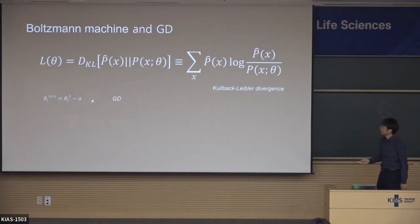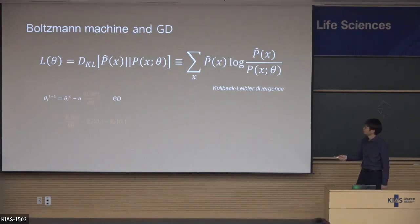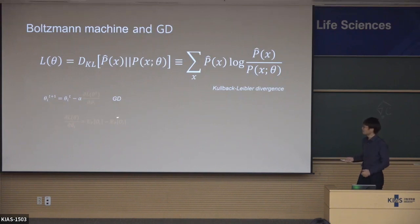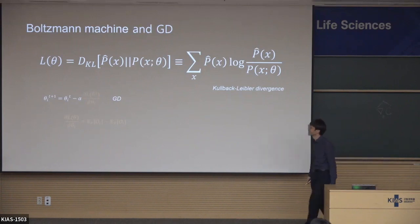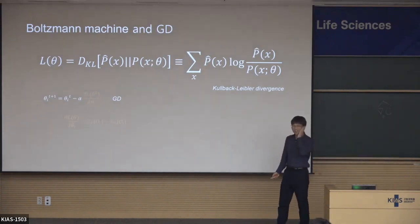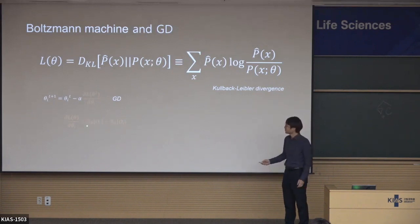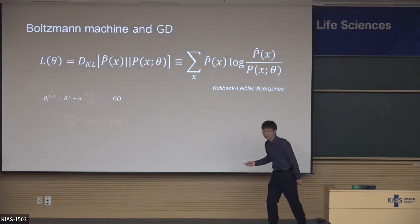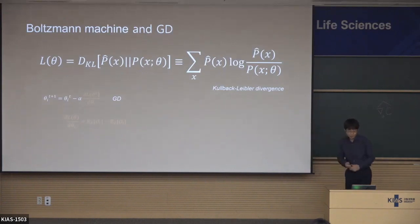To apply gradient descent, you need the gradient of this loss function with respect to theta. Because the Hopfield model is an exponential family model, it is very easy to compute this gradient. The result is that the gradient is nothing but the difference in expectations between the model distribution and the empirical distribution. You can easily calculate this.